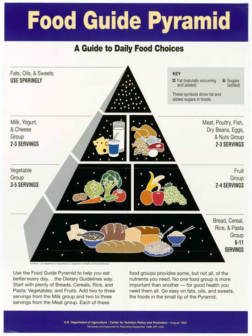Distractions can increase food intake by initiating patterns of consumption, obscuring the ability to accurately monitor consumption, and extending meal duration. For example, greater television viewing has been associated with increased meal frequency and caloric intake. A study in Australian children found that those who watched two or more hours of television per day were more likely to consume savory snacks and less likely to consume fruit. Other distractors such as reading, movie watching, and listening to the radio have also been associated with increased consumption.